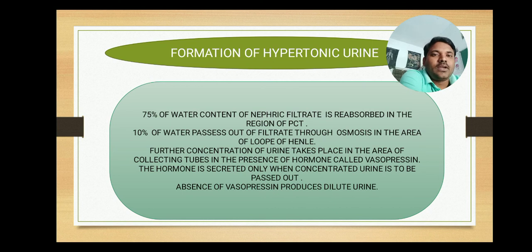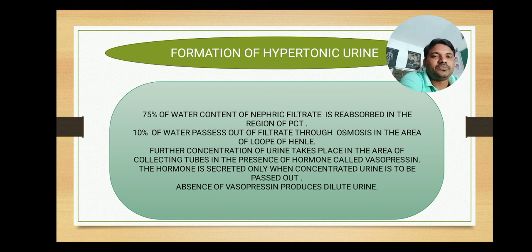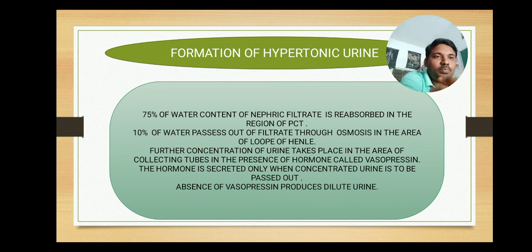The last step is formation of concentrated urine. 75% of the water content of the nephric filtrate is reabsorbed in the region of the PCT when the primary urine enters the tubular part. A further 10% is reabsorbed in the area of the loop of Henle — the U-shaped structure that connects the PCT and DCT — so 10% of water is further removed from the filtrate.